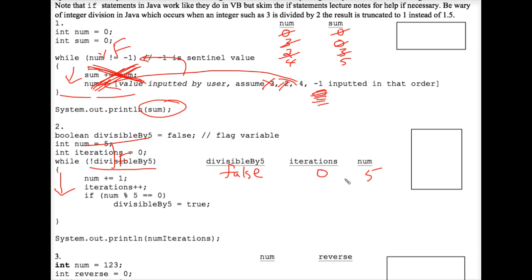And we do num plus equals 1. Cross that out and make it a 6. We do iterations plus plus. Cross that out and make it a 1. And now we hit the if statement. An if statement with no curly braces, but oh well. It's bad style, but I'll still look at it. If num mod 5 double equals 0. Well, num is currently 6. 6 divided by 5 yields a remainder of 1. And that 1, we're checking to see if that 1 is equal to 0. That is a false expression.